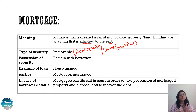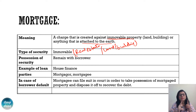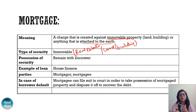The most important concept to keep in mind is possession of security. In mortgage, the possession of the security will stay with the borrower, because the security is immovable property and cannot be moved to the lender. So the possession will stay with the borrower.